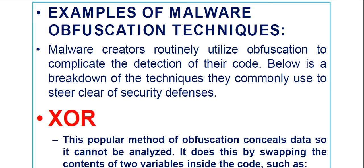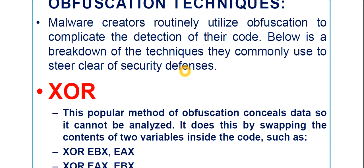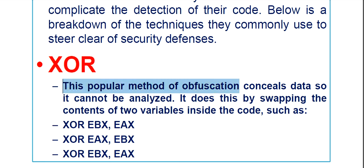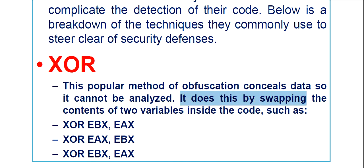Malware creators routinely utilize obfuscation techniques to complicate the detection of their code. One commonly used technique is XOR — a popular method of obfuscation that conceals data so it cannot be analyzed. It does this by swapping the contents of two variables inside the code.